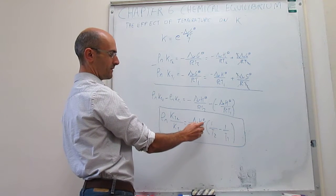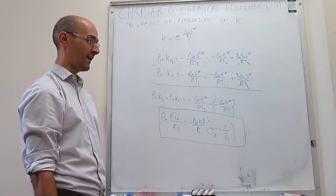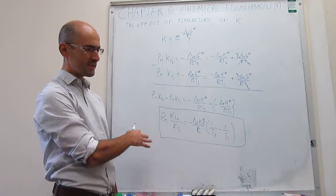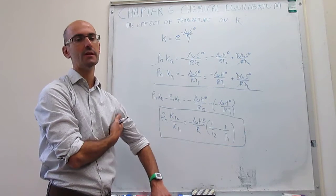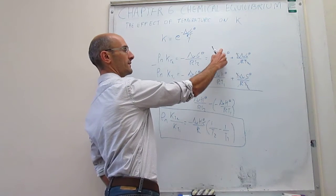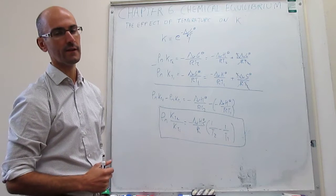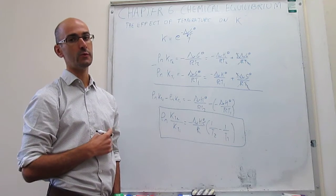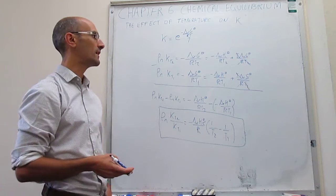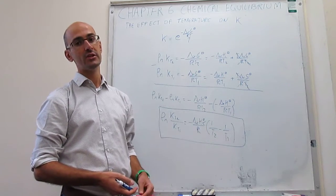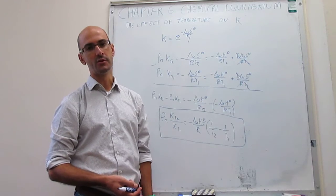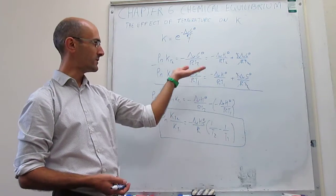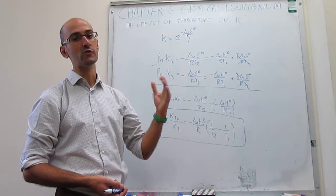Notice that the change in equilibrium constant with temperature is dictated solely by the exothermicity or endothermicity of the reaction — entropy does not play a role. There is a key approximation in this derivation: we are assuming that delta_R H° and delta_R S°, the reaction enthalpy and entropy, do not change with temperature. We know that is not strictly true — for example, Kirchhoff's law describes how reaction enthalpy changes with temperature, and we have seen how entropy also changes with temperature.